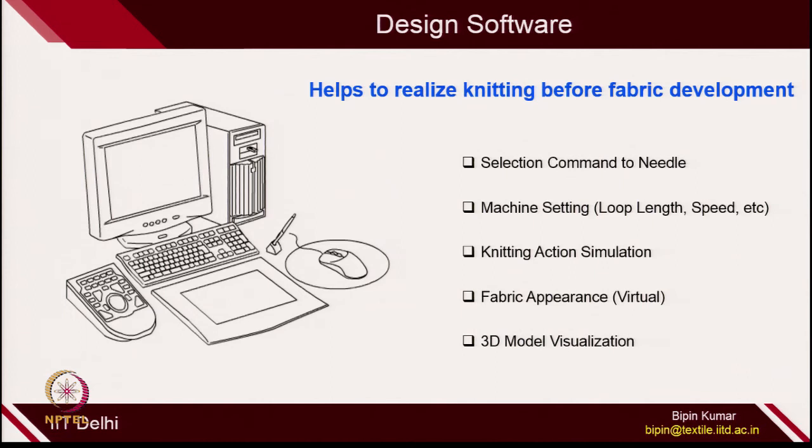Let's see what exactly this software does. This design software is actually very powerful to help you in realizing the knitting action before fabric development. This is a big advancement in knitting because in real practice, whenever we make any design, we have no idea how the fabric surface will look. If you keep making different designs on the machines, you will be wasting a lot of yarn and samples during this process. That's why, before you make any design or pattern, if there is a mechanism through which you can realize the fabric, you can see the knitting action, that will be really useful without wasting a lot of yarns on the machine.